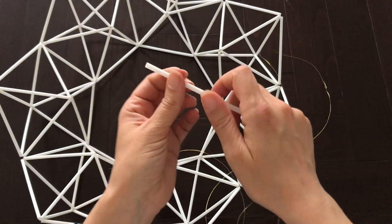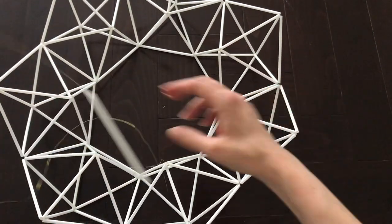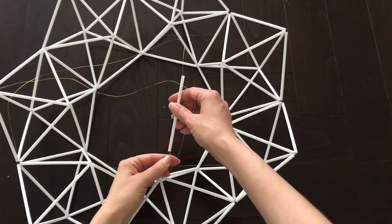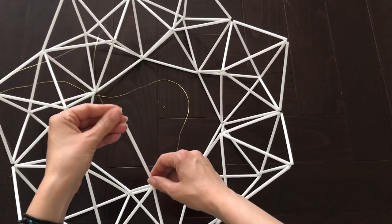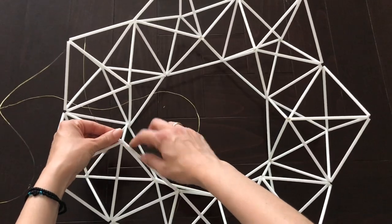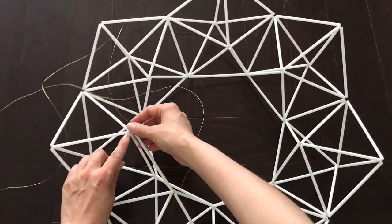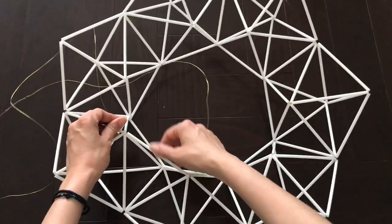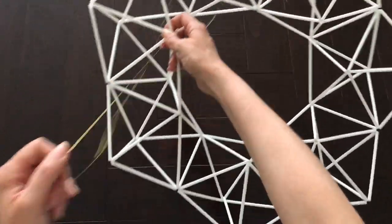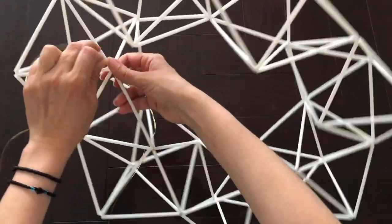Thread the straw and connect it to the center of the other pentagon. Keep going until you connect all the pentagons together. There we go.